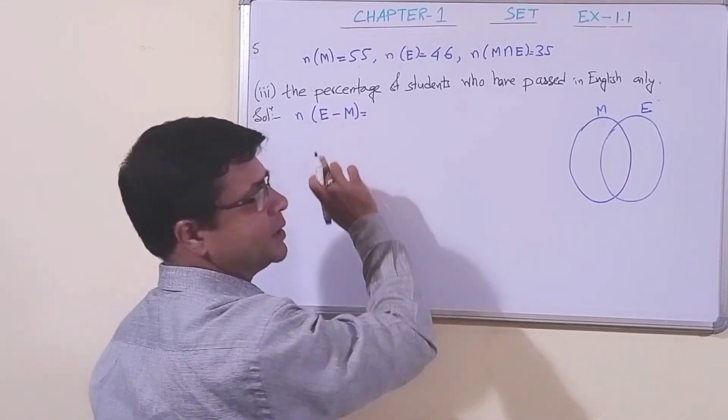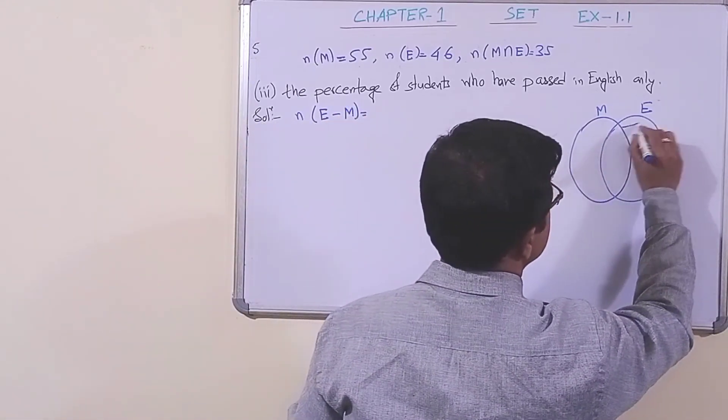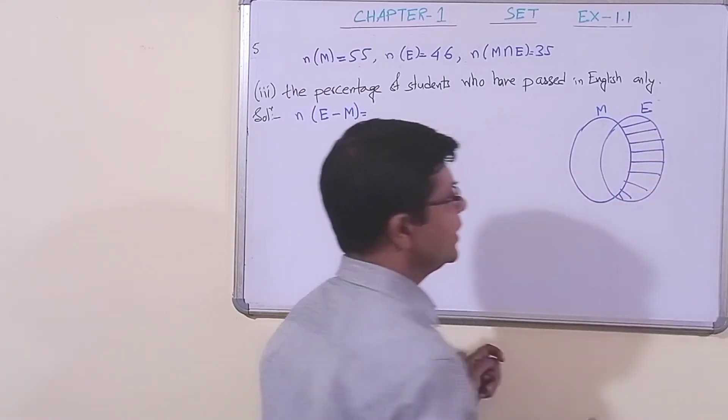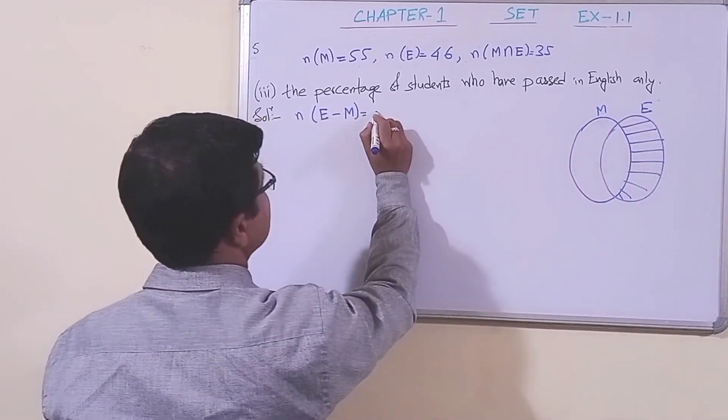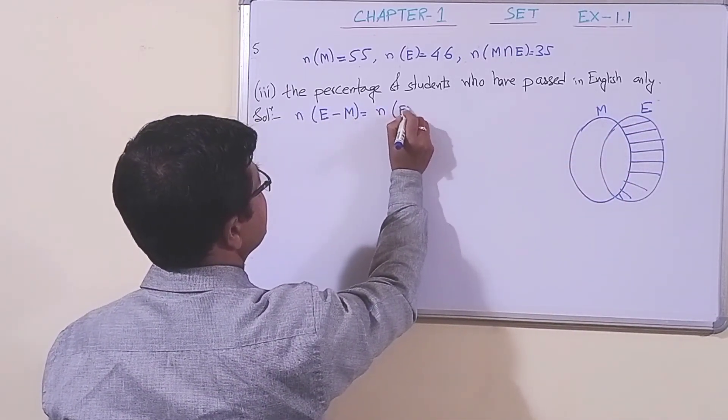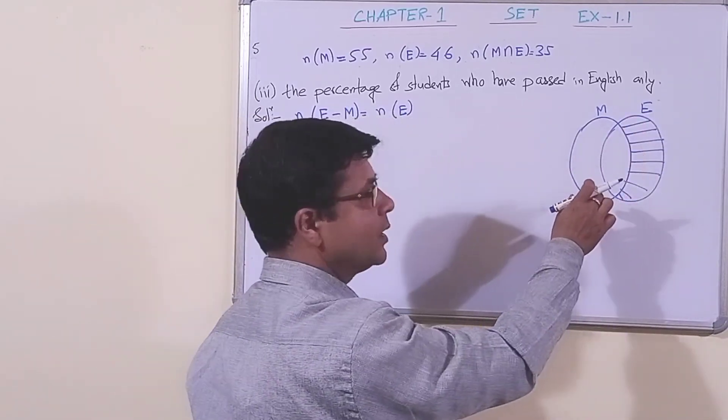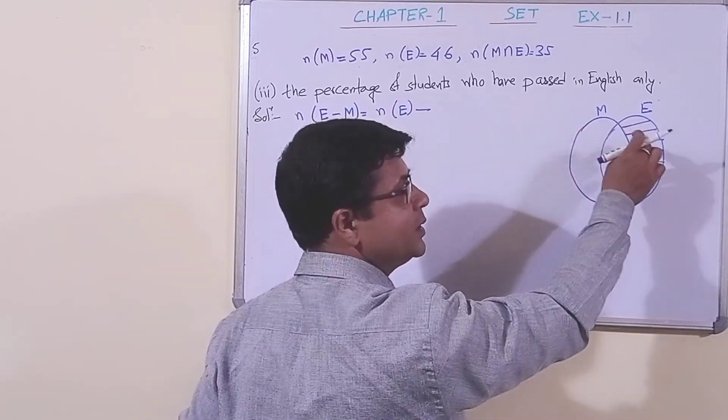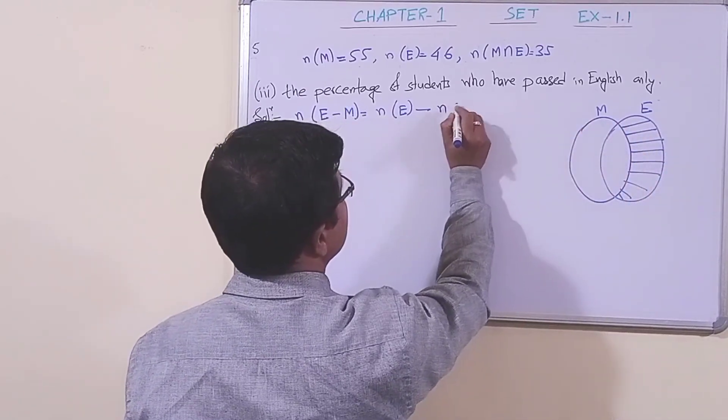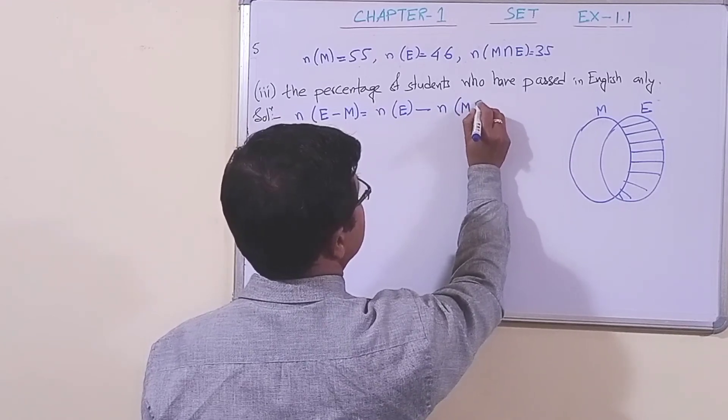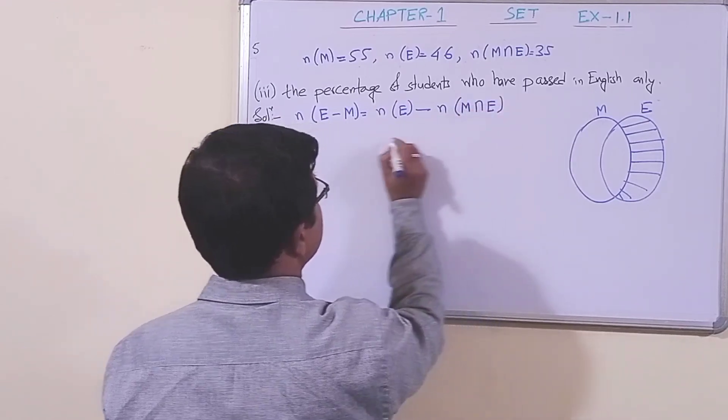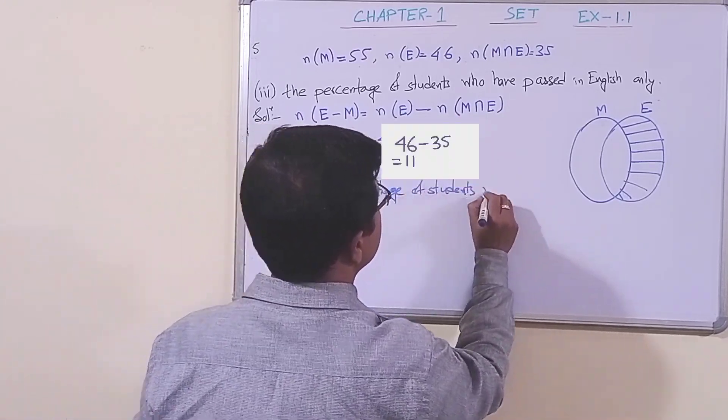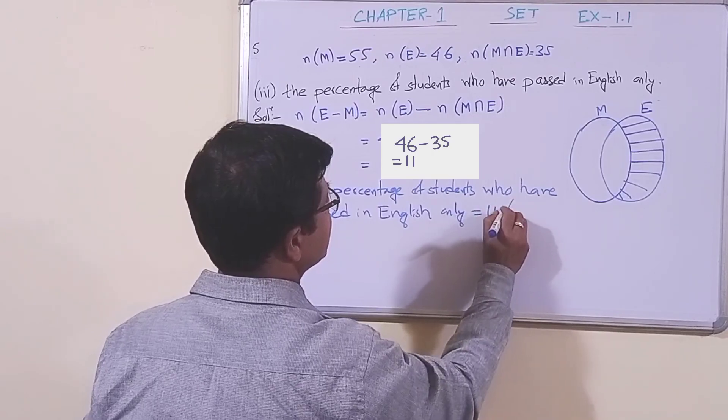That means only they have passed in English. From set E, we have to subtract the intersection part. This is the intersection part of these two sets, M∩E. So n(E-M) = n(E) - n(M∩E) = 46 - 35 = 11. Therefore, the percentage is 11 percent.